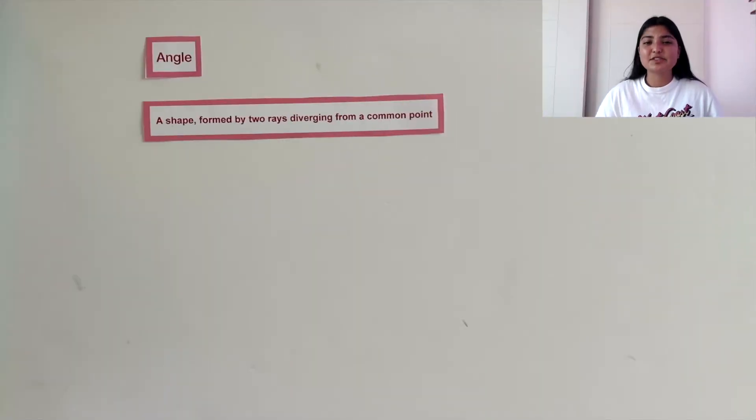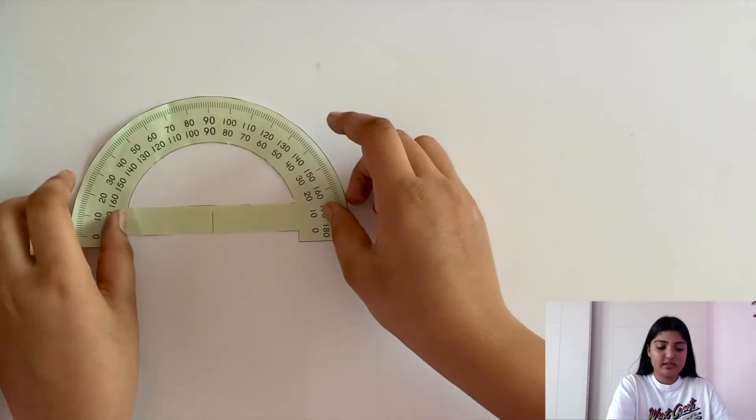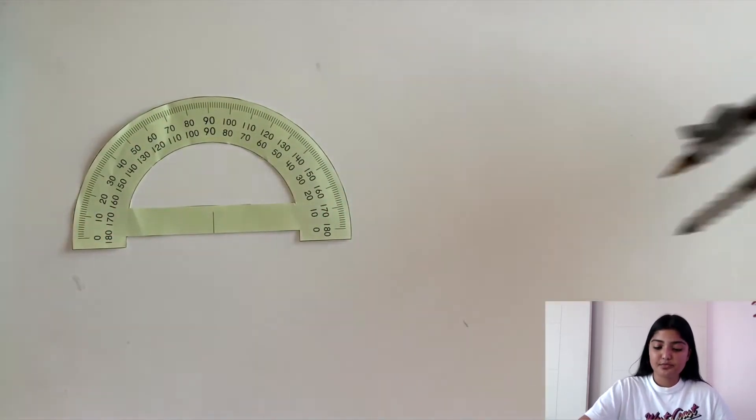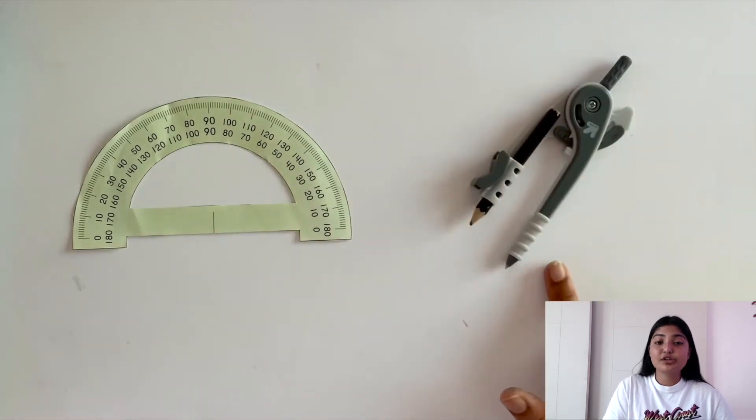Now let's draw an angle. There are two ways to draw an angle. We can either draw it using a protractor or using a compass.